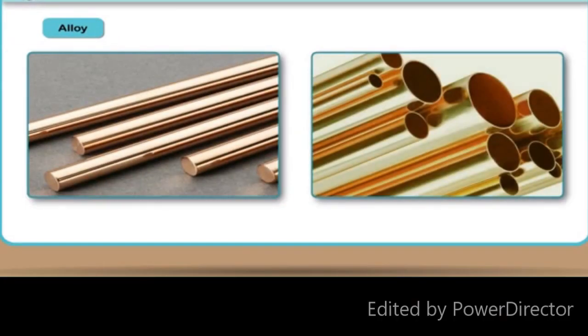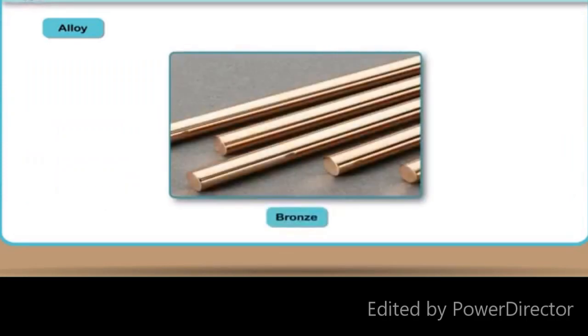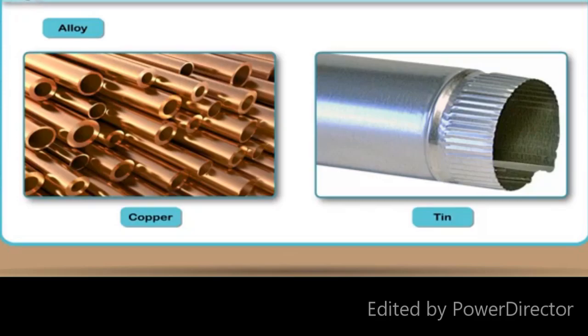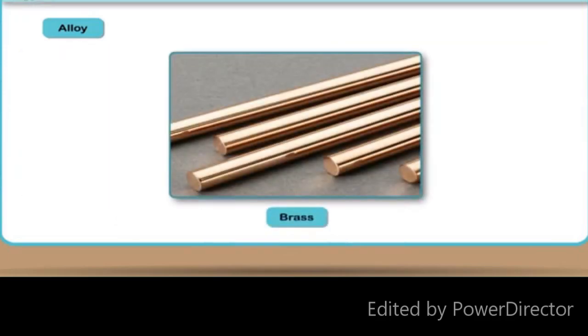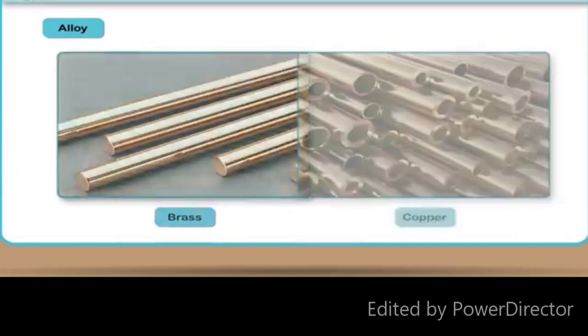An alloy is a mixture of a metal with another metal or non-metal. For example, bronze is an alloy of copper and tin. Brass is an alloy of copper and zinc.